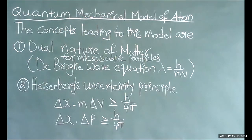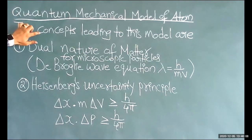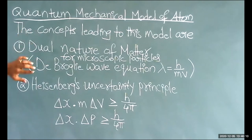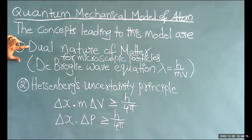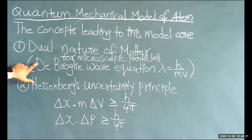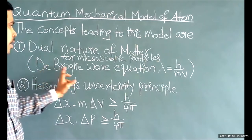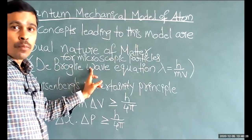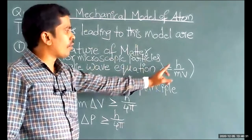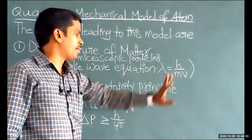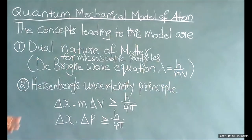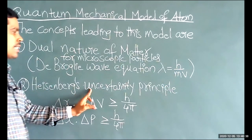This is the ultimate model of atom. It was built using two concepts. One is the dual nature of matter. De Broglie explained a wave equation for microscopic as well as macroscopic particles. The De Broglie wave equation for a moving matter is lambda equals h by mv. The second concept is Heisenberg's uncertainty principle.